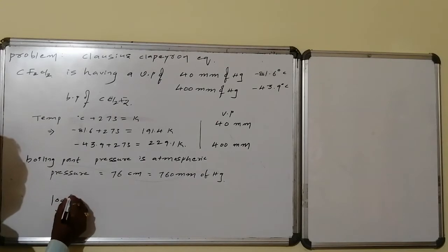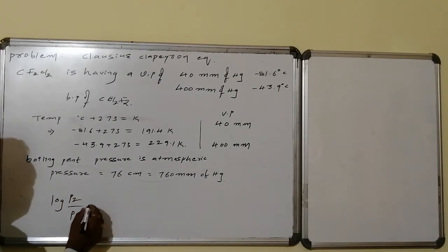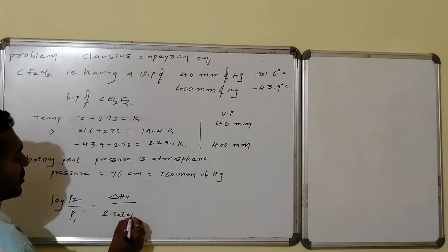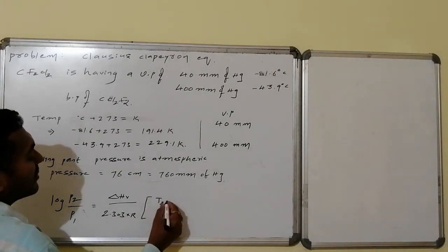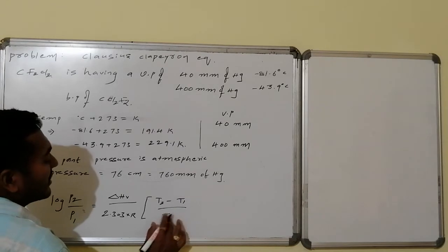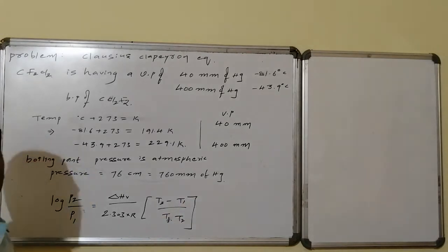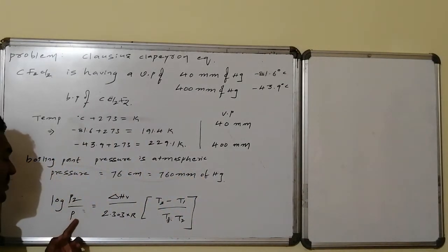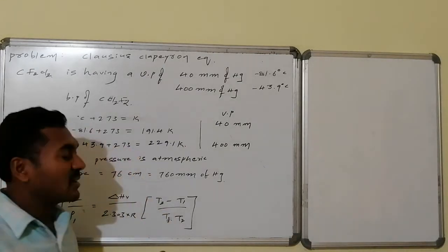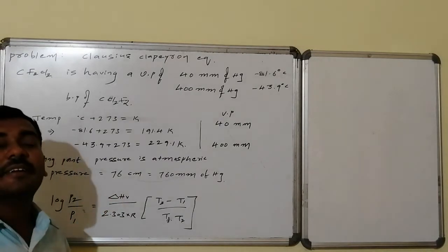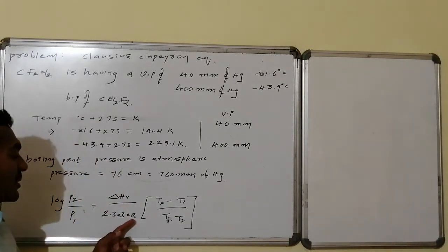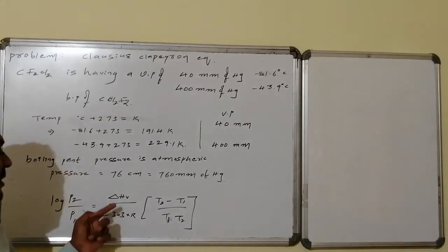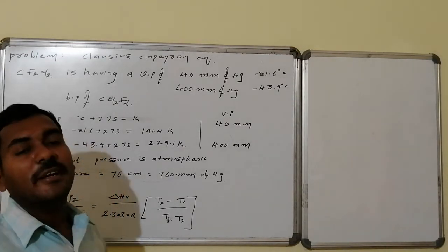In the Clausius-Clapeyron equation, P1 and P2 are vapor pressures under conditions 1 and 2, T1 and T2 are the corresponding temperatures, and ΔHv is the latent heat of vaporization. The value of R depends on the units: if ΔH is in calories, R is 2 cal/mol·K; if in joules, R is 8.314 J/mol·K.